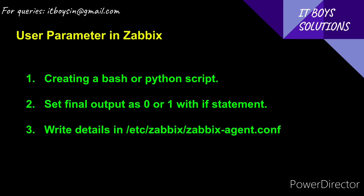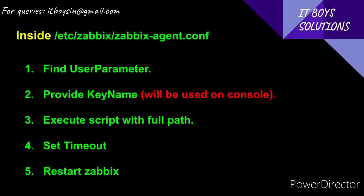You need to just create a Bash script or a Python script and set its final output to zero or one. Then the last step is to write something in the agent file. Inside the agent file, you can find or search for 'UserParameter', provide a key name — remember it, as you will use it on the console — and then execute that script with its full path.